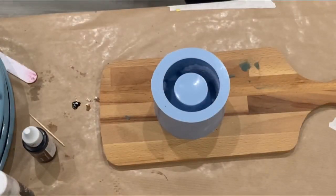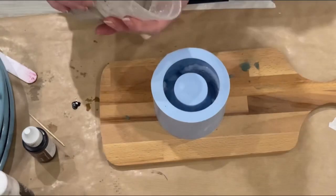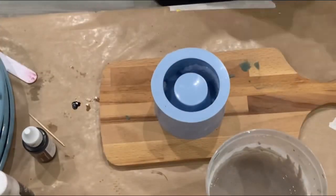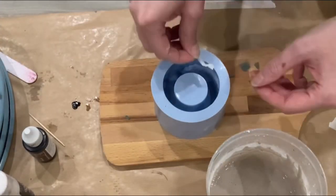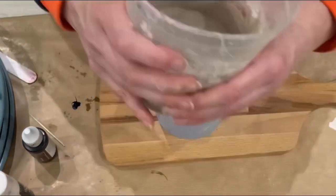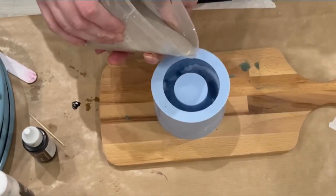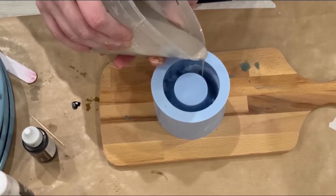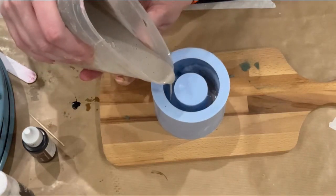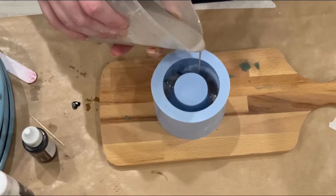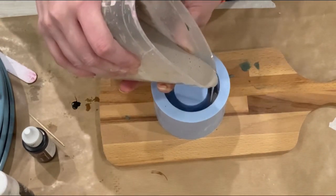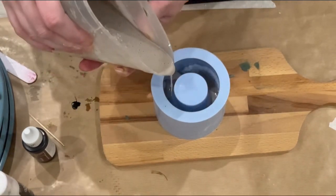And I mixed my Jesmonite with the praline color from Stephanie Etta, also resin ink. And I think it looks a little bit like sort of mocha color, light mocha.